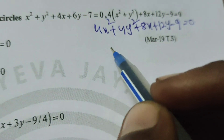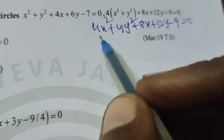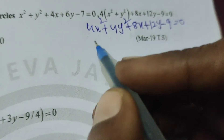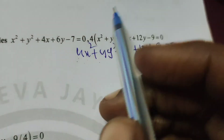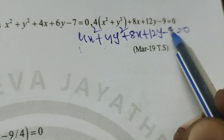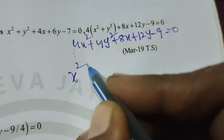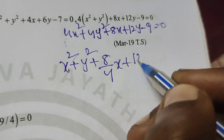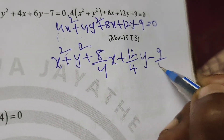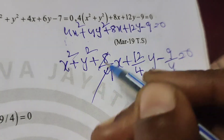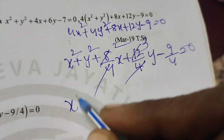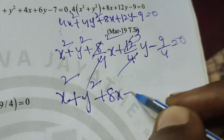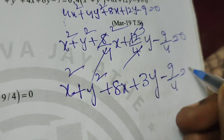For the circle equation, the coefficients of x² and y² must both equal 1. So divide the whole S dash equation by 4. Therefore S dash becomes: x² + y² + (8/4)x + (12/4)y - 9/4 = 0, which simplifies to x² + y² + 2x + 3y - 9/4 = 0.